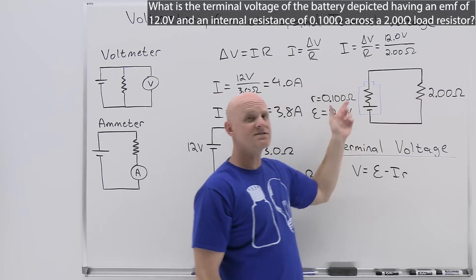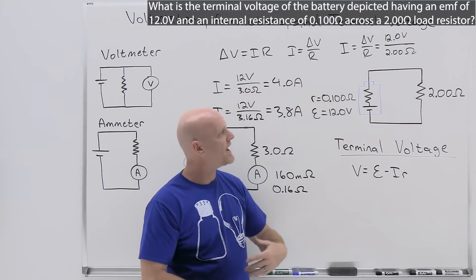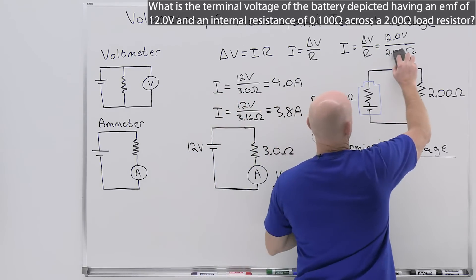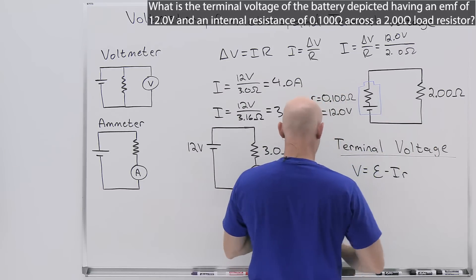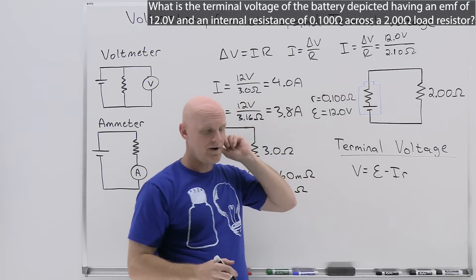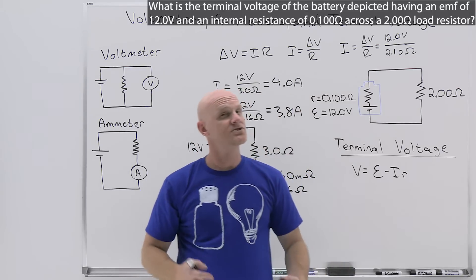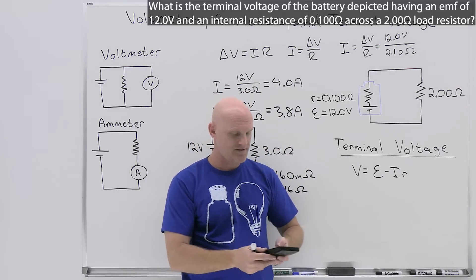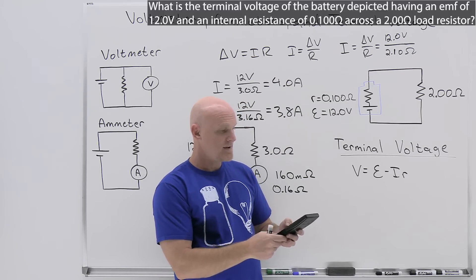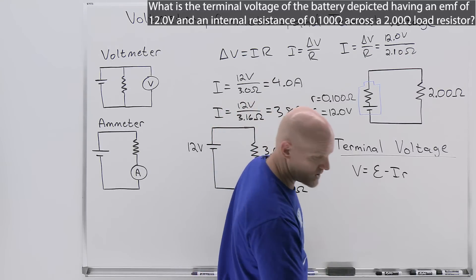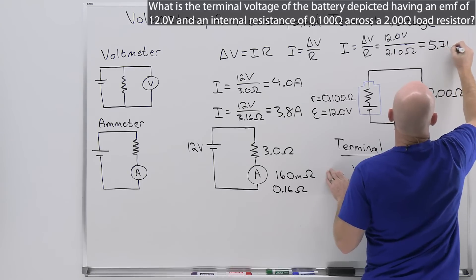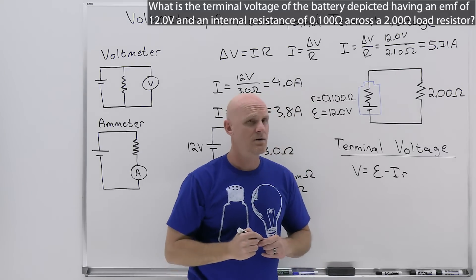We're going to factor that in now. If we did factor it in, these two resistors are in series, and to find the equivalent resistance of the circuit, we just simply add them. 2 plus 0.1 is 2.1. That's going to change our calculation ever so slightly. So it's now 12.0 volts over 2.1 ohms, and we're going to find out we have less current than we would have thought. 12.0 divided by 2.1 gets us 5.71 amps.